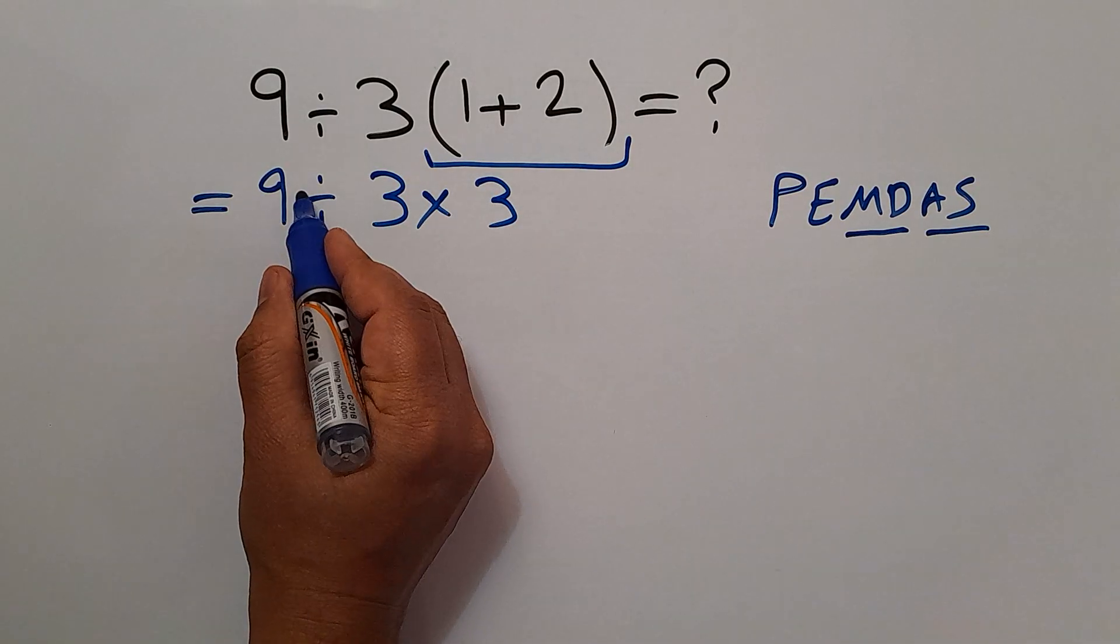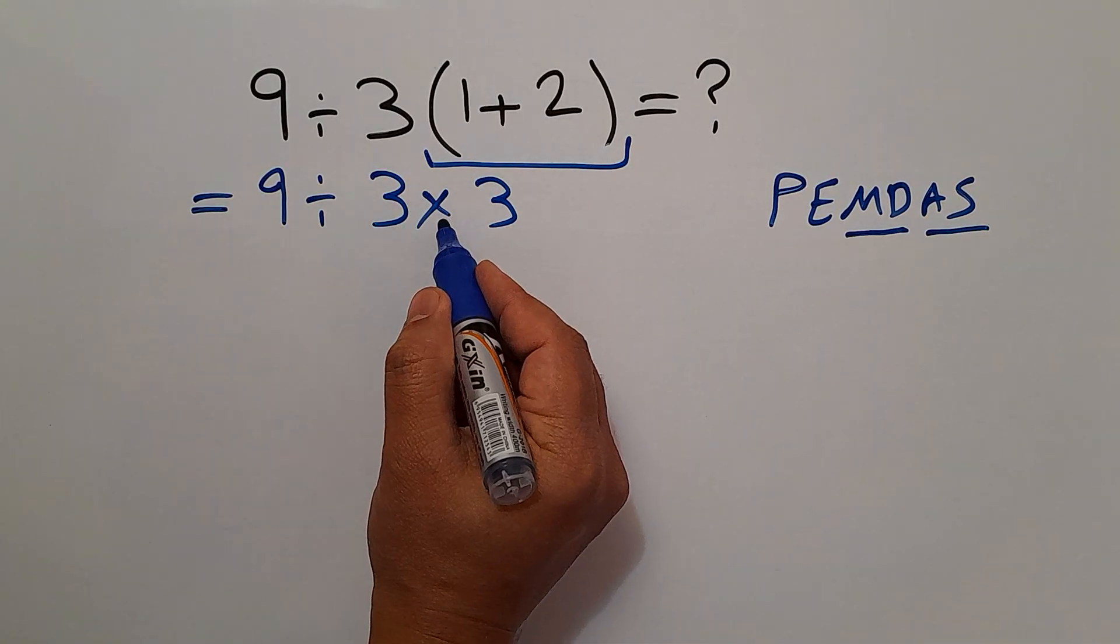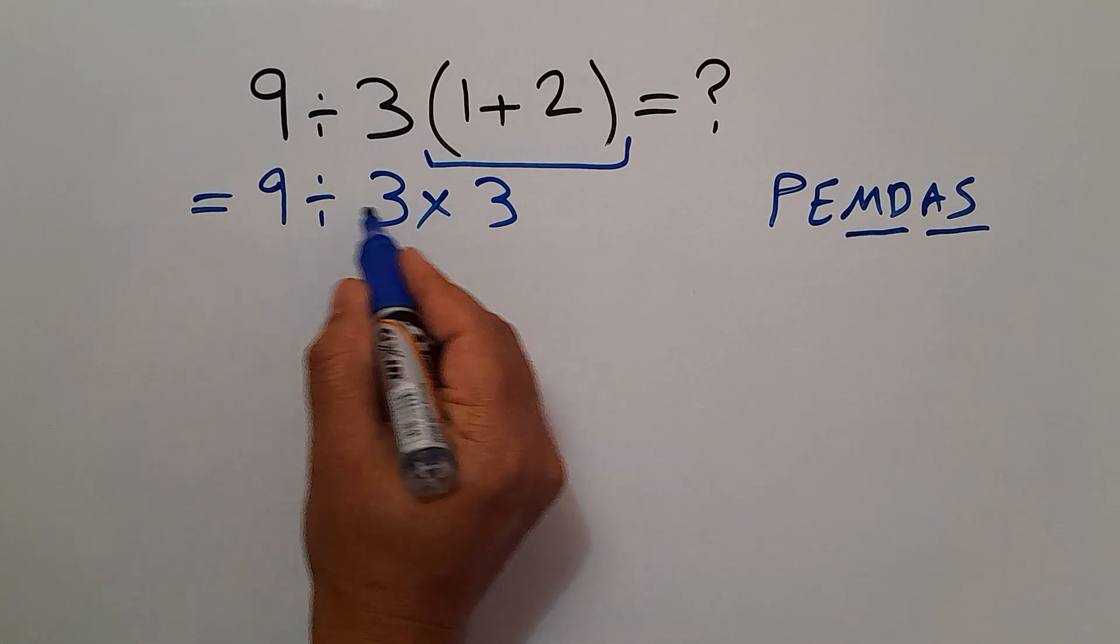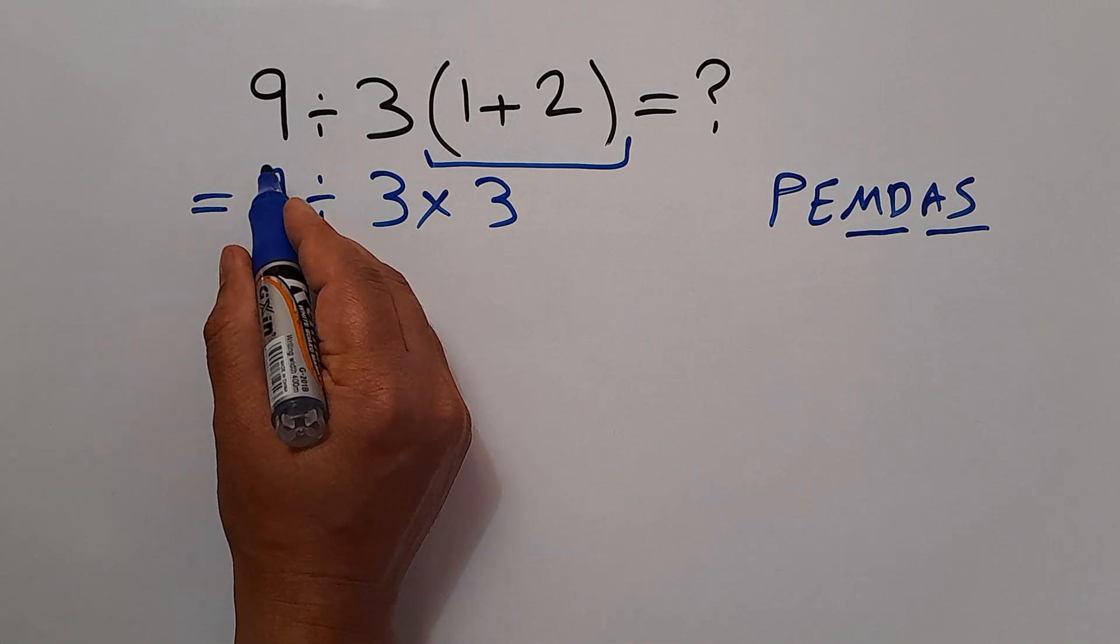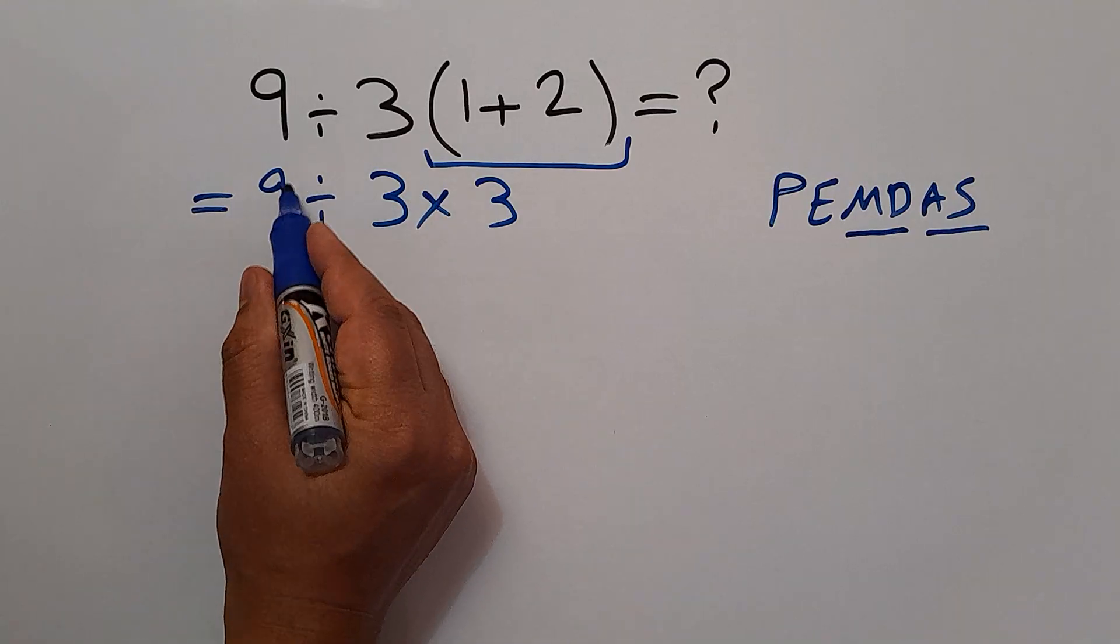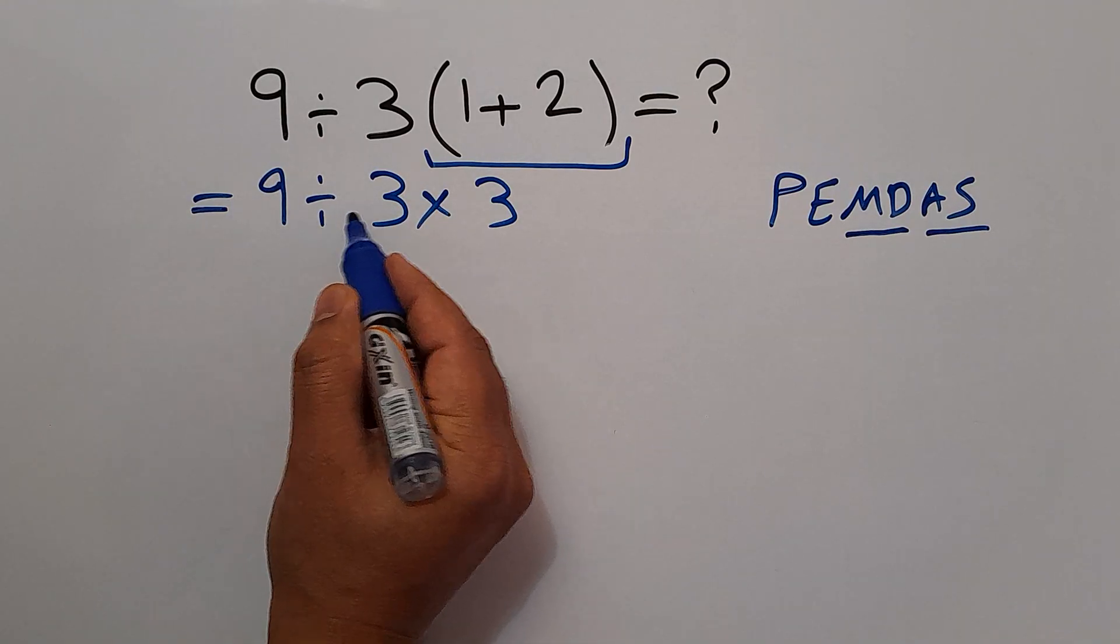Now, we have one division and one multiplication. Multiplication and division have equal priority, and we have to work from left to right. So, first, division and then multiplication.